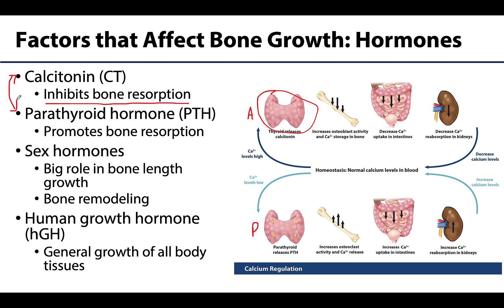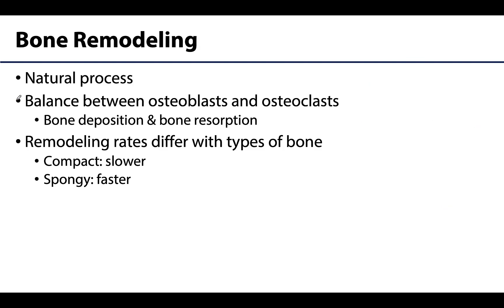Other factors can affect bone growth, such as exercise: weight-bearing exercise can stimulate osteoblasts. The aging process is one where osteoclastic activity tends to outpace osteoblast activity, decreasing bone mass. This brings up bone remodeling, which occurs throughout life and is simply the replacement of old bony tissue with new tissue — a very natural process. It involves both osteoblasts and osteoclasts working in unison, and things become dangerous when one set works faster than the other.